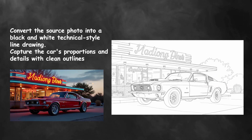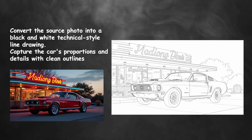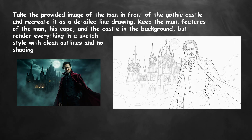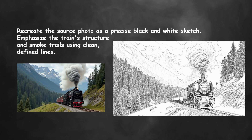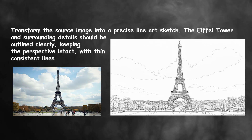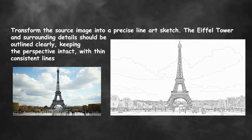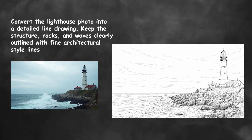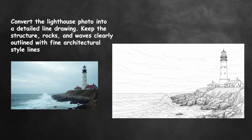You can give the model a photo of an object, place, or whatever you want, and it will turn it into a detailed sketch or line drawing of the same image. This use case is super useful for things like creating coloring books, making comic style art, or designing unique graphics for posters and social media.